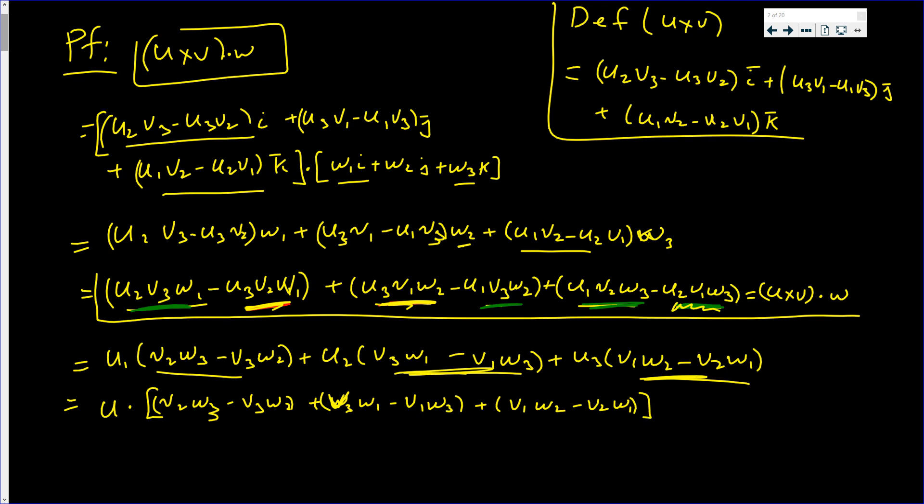v1 w3, plus v1 w2 minus v2 w1. And basically this is the i component, the j component, and the k component. So it's u dotted with what's in the big brackets, but what's in the big brackets just happens to be v cross w.